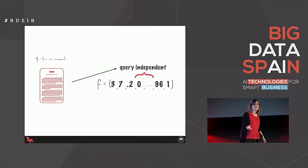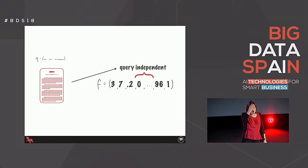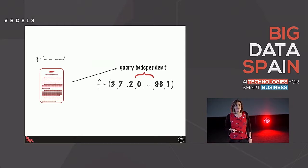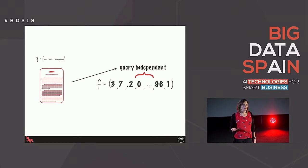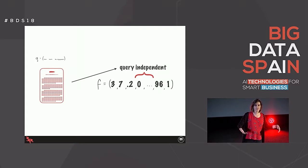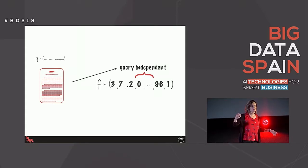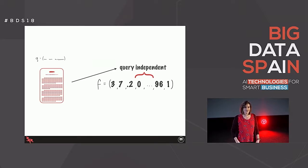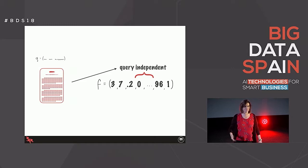Some elements of the feature vector are going to just depend on the document, independent of the query. These might be things like the length of the document - how many characters, how many words, how many paragraphs - the kind of summary you get when you do word count on a document in Word.